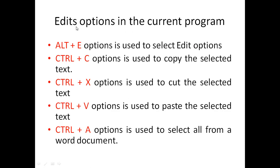Now I describe the Edit options. Alt plus E is used to select Edit options. Ctrl plus C is used to copy the selected text. Ctrl plus X is used to cut the selected text. Ctrl plus V is used to paste the selected text. Ctrl plus A is used to select all text from the Word document.